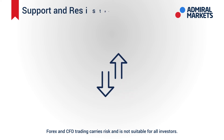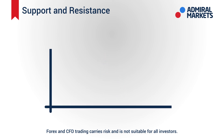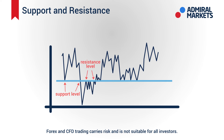The role of support and resistance levels actually gets reversed once they are broken. For instance, if the price falls below the support level, then that becomes a new resistance level. Similarly, if the price rises above the resistance level, then that becomes a new support level.